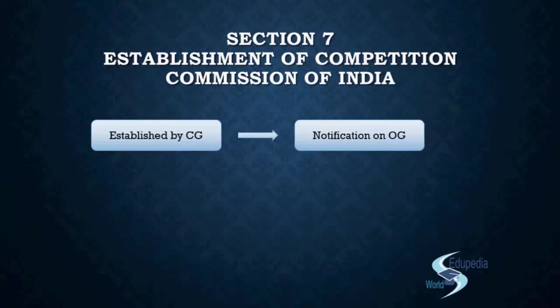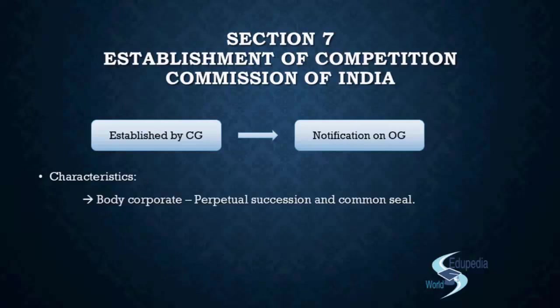Now we look at the characteristics of this Commission. It is a Body Corporate, so it has Perpetual Succession and a Common Seal. Since it is not a living individual, when they need to sign or authorize something, they use the Common Seal. So the Competition Commission has both Perpetual Succession and a Common Seal.